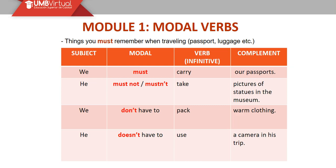He must not, or mustn't, take pictures of statues in the museum. 'Must not' is the longer way to use this modal verb, or we can use 'mustn't.' We don't have to pack warm clothing. And he has learned how to use a camera on the street.